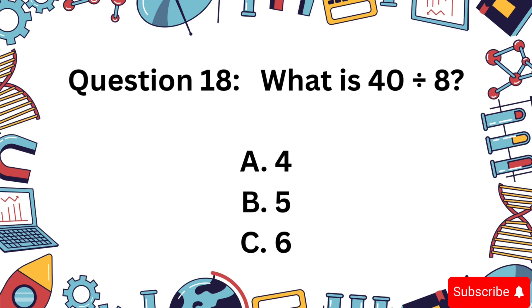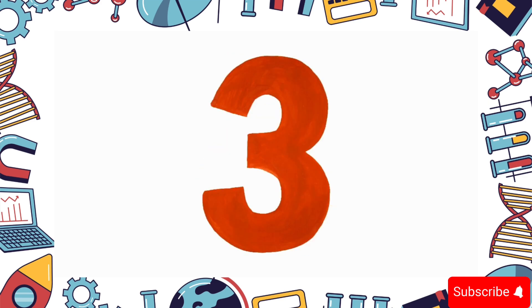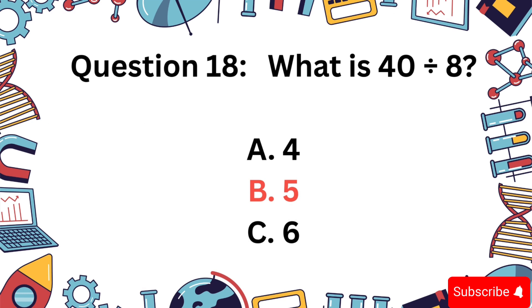40 divided by 8. Is it A, 4, B, 5, C, 6? The answer is B, 5.